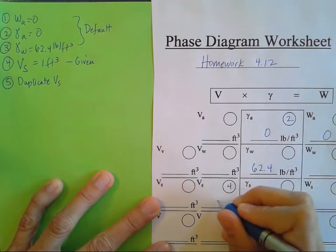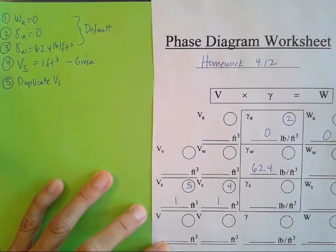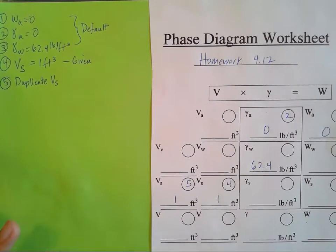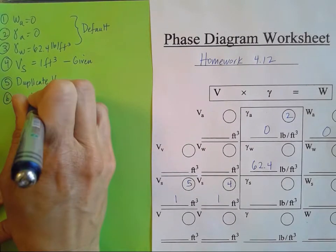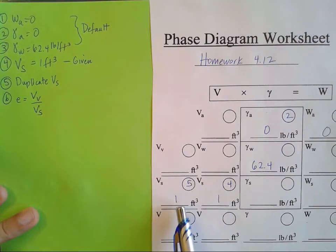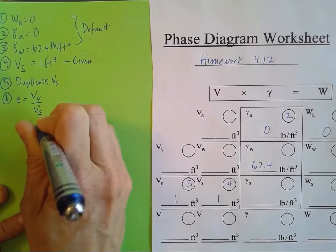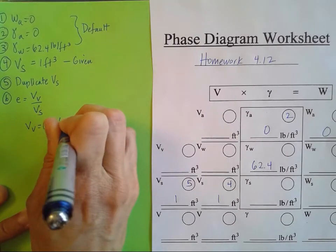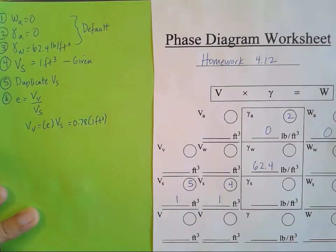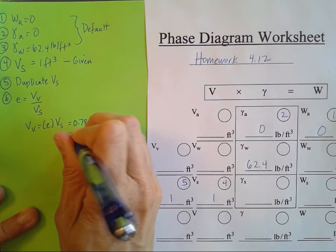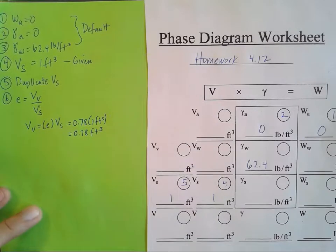We'll put that in for number four as one, and number five duplicates that. Now let's use the void ratio, because it gives a relationship between volume of voids and volume of solids. Since the volume of solids is known, we can find the volume of voids: it's the void ratio times volume of solids — 0.78 times one cubic foot — which gives 0.78 cubic feet. That's number six.